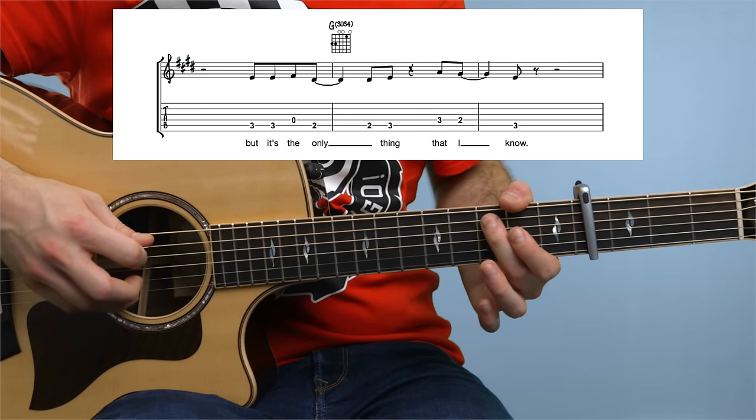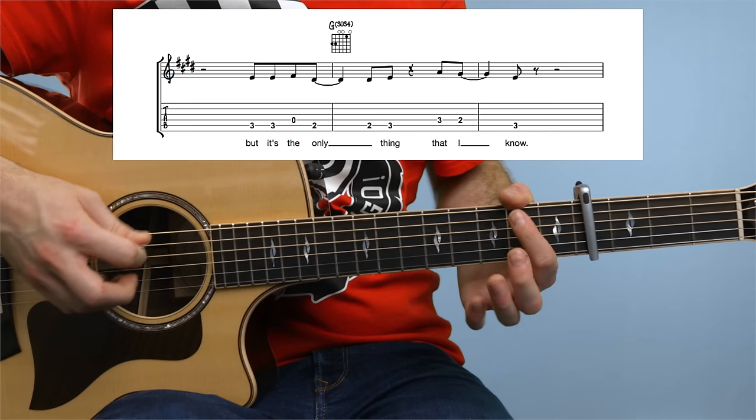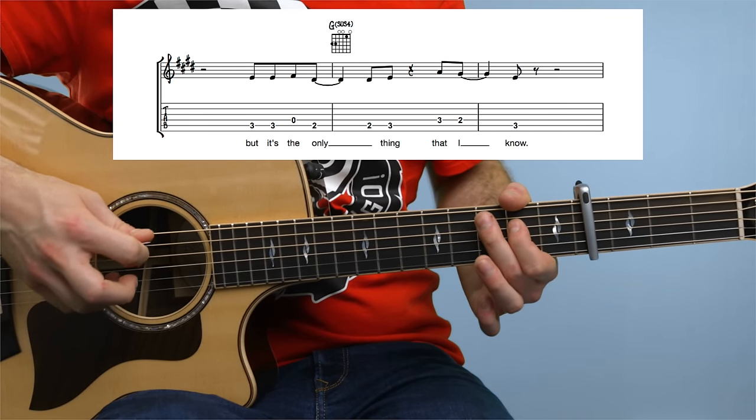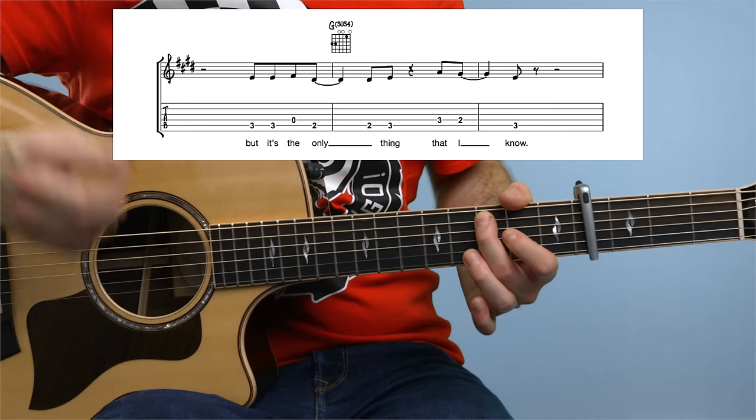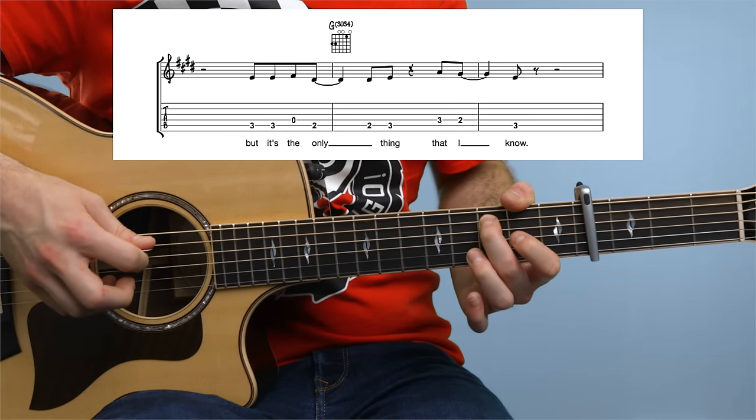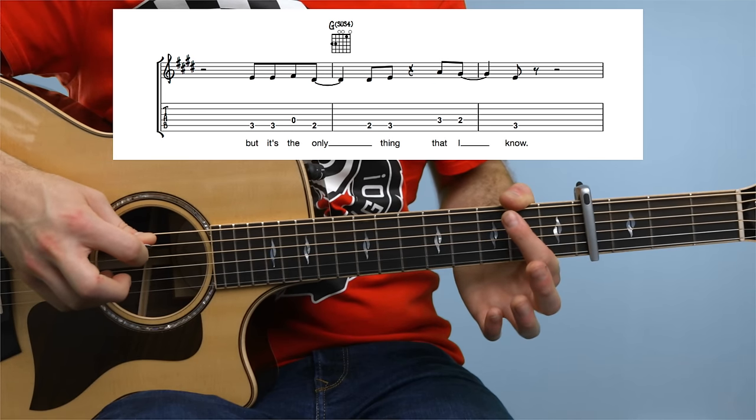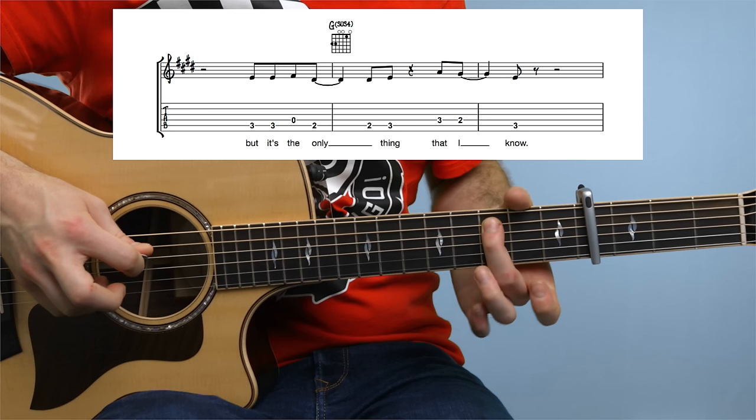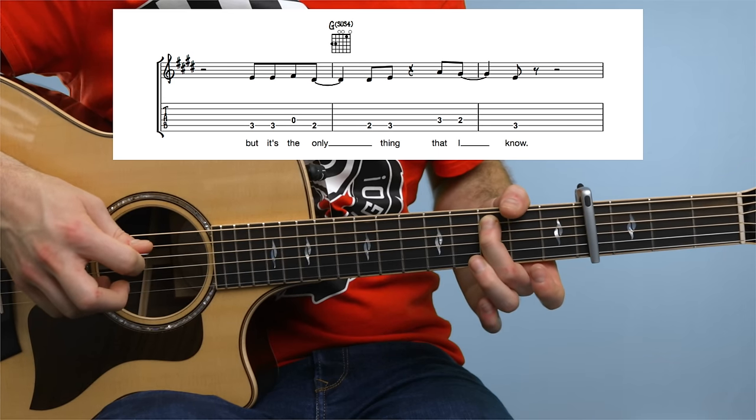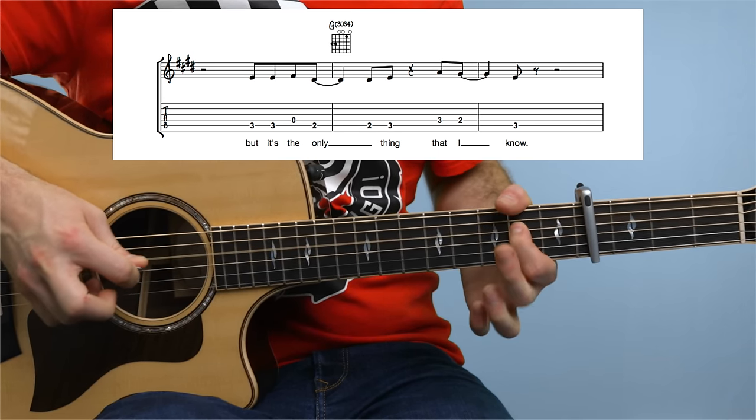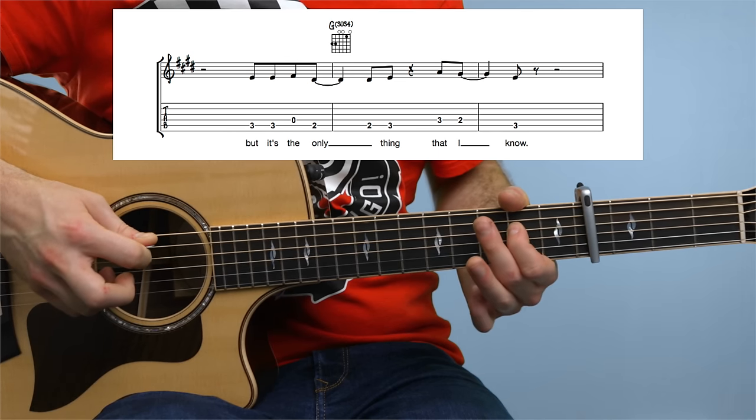Phrase 2 goes like this. 3-3 on the fifth string, open fourth, 2 on the fifth string played twice. 2-2-0-2 to fret number 3, then 3-2 on the fourth string, 3 on the fifth string.